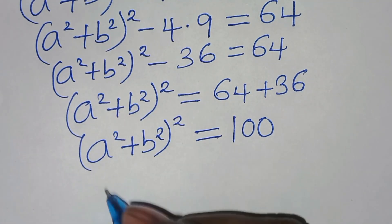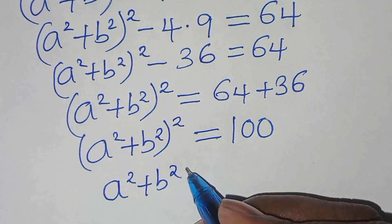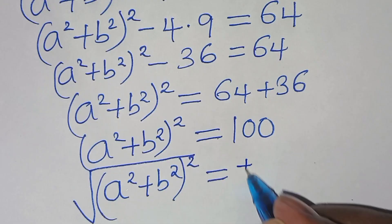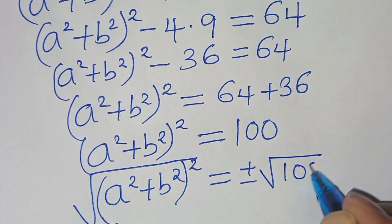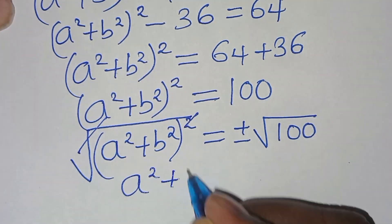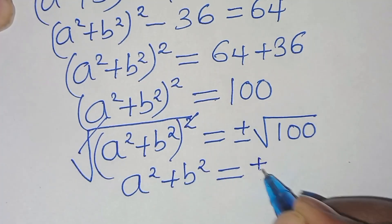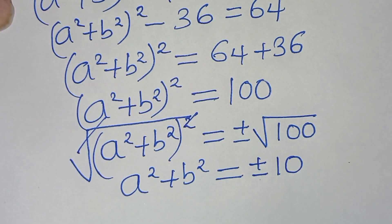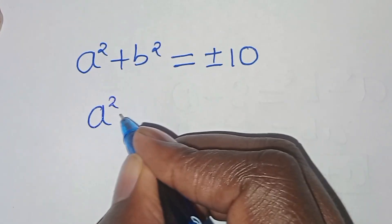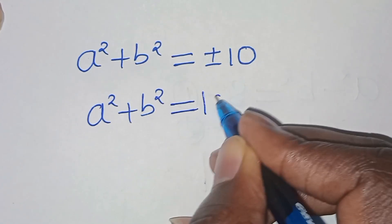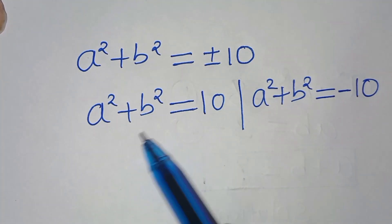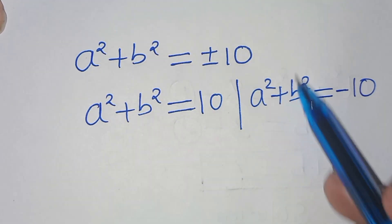To solve for a squared plus b squared, we take the square root on both sides, giving a squared plus b squared equals plus or minus the square root of 100, which is 10. So a squared plus b squared equals 10, or a squared plus b squared equals minus 10. We now handle each case separately.